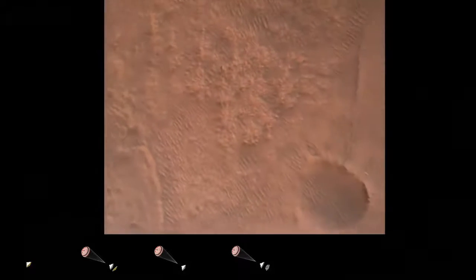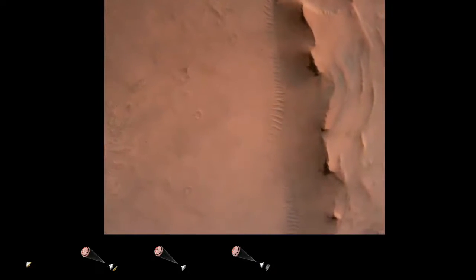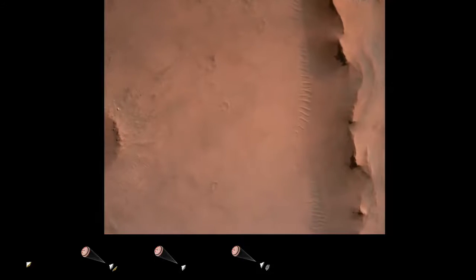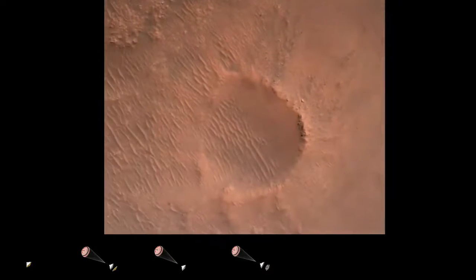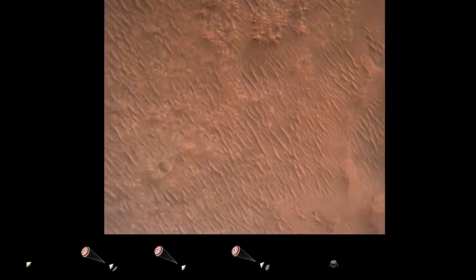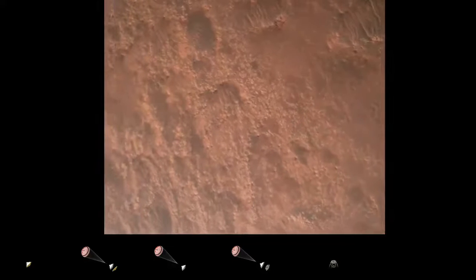Back shell separated. Current velocity is 83 meters per second at about 2.6 kilometers from the surface of Mars. We have confirmation that the back shell has separated. We are currently performing the divert maneuver. Current velocity is about 75 meters per second at an altitude of about a kilometer off the surface of Mars.